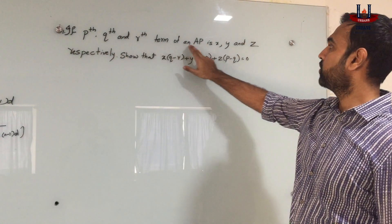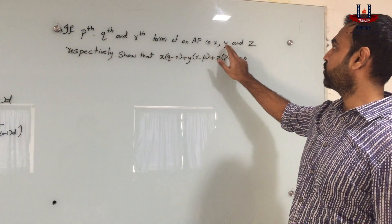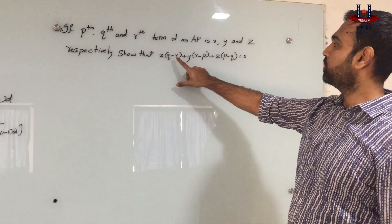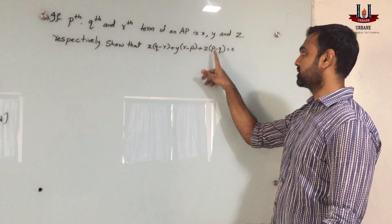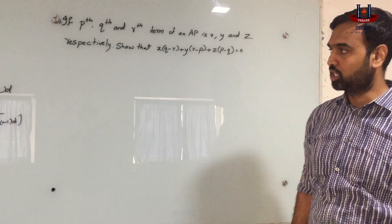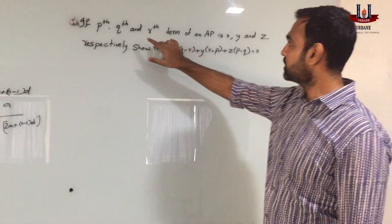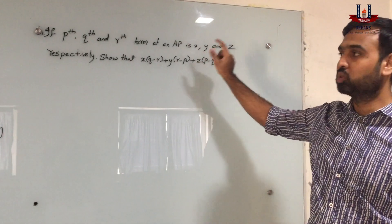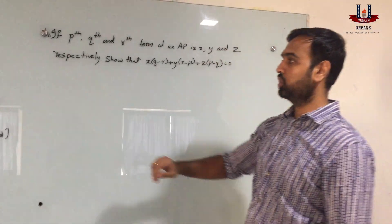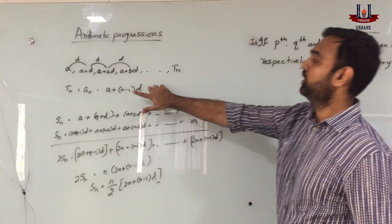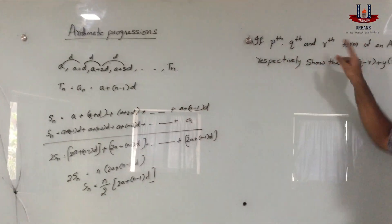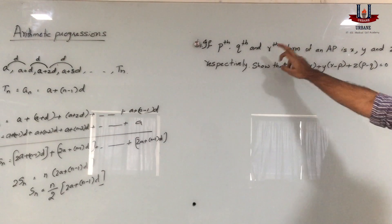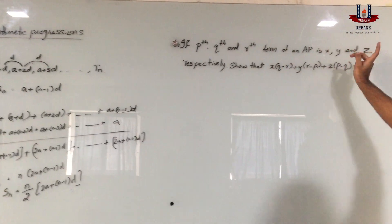This is a question in arithmetic progression from an exam point of view. The question is: if the pth, qth, and rth term of an AP are x, y, and z respectively, show that x(q minus r) plus y(r minus p) plus z(p minus q) is equal to zero. These are the term positions and these are the values at those positions. We will be using the nth term formula.